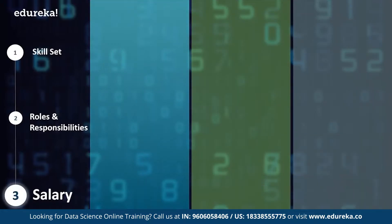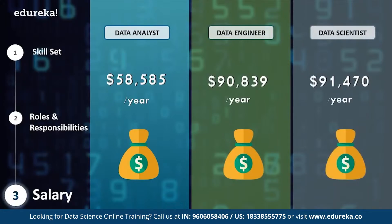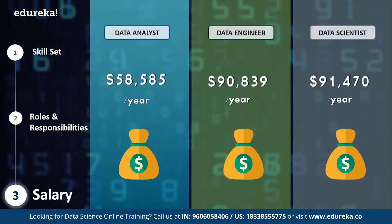Now let's look at how much you can earn in a career in data analytics, data engineering, or data science. The typical salary of a data analyst is just under $59,000 per year, whereas a data engineer can earn up to $90,839 per year, and a data scientist can earn up to $91,470 per year. While the figures for data engineer and data scientist may look similar at first, data scientists can earn 20 to 30% more than an average data engineer, and companies like Facebook and IBM post salaries up to $136,000 per year.